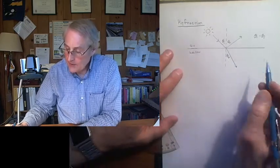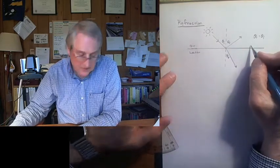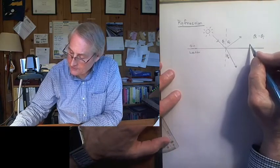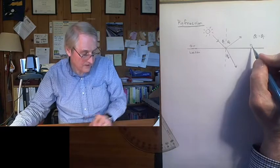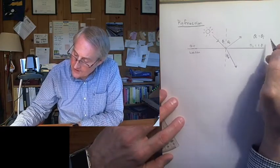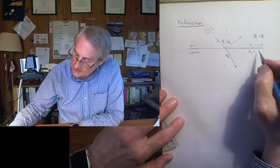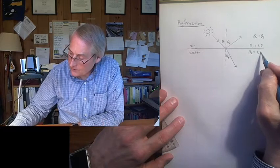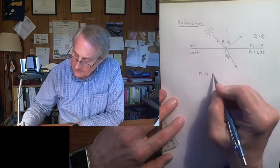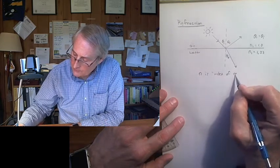We're going to characterize both of these materials by a property that we'll call the index of refraction. So this one is, I'll call it N1, is 1.0, that's for air. And this one, I'll call it N2, and this one, it turns out the value is 1.33 for water. This N is the index of refraction.